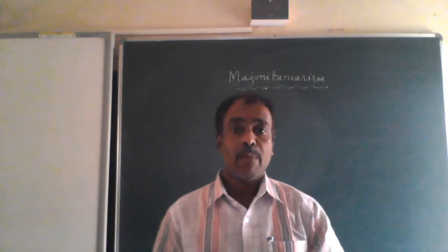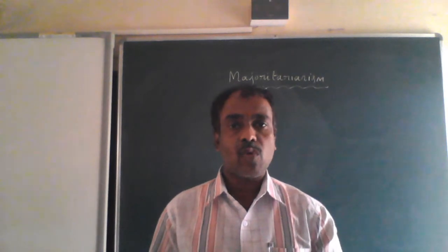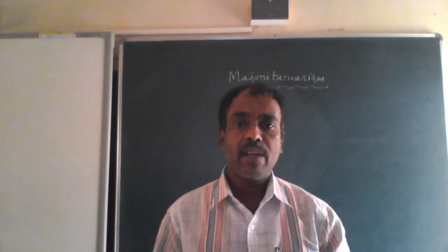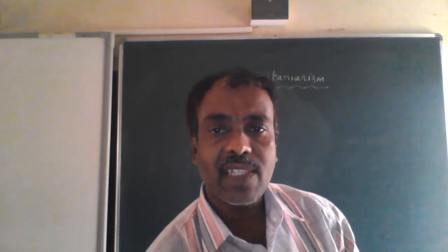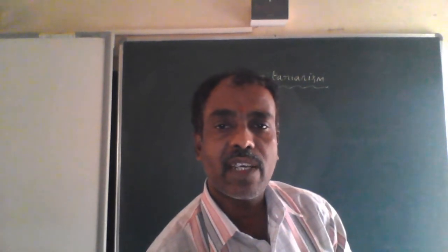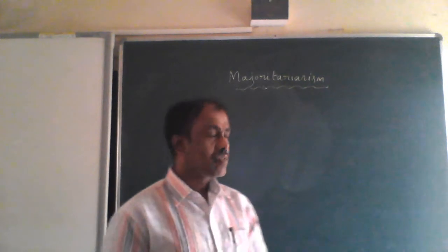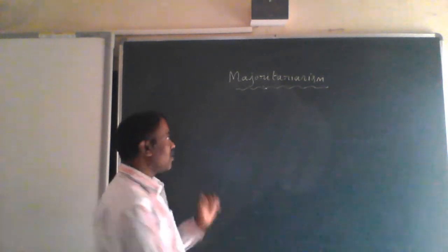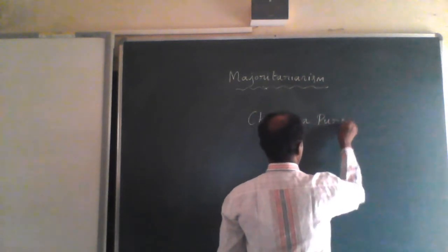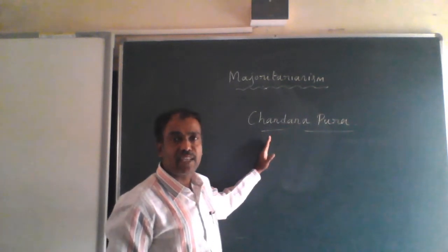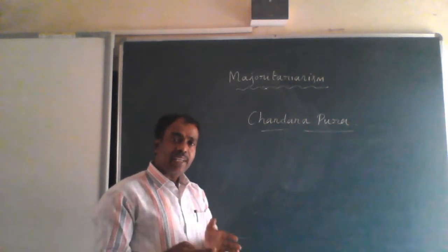In a society, maybe there are different socio-religious communities or different language speakers. There are varieties of people living in a society. I would like to explain with an example. We will take an imaginary one — maybe Chandanapura. I have taken this as an imaginary name, as one of the villages — Chandanapura.